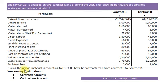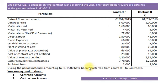During the period, materials amounting to Rs. 9,000 have been transferred from Contract R to Contract B. From the above information, we are to prepare: 1st Contracts Account and 2nd Contract Tees Account.